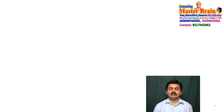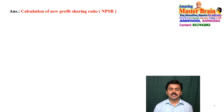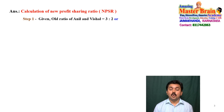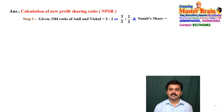Let us solve the problem. First method: Calculation of New Profit Sharing Ratio (NPSR). First, what is given in the problem? The old ratio of Anil and Vishal is 3:2, which we write as 3/5 and 2/5. Sumit's share is 1/5. Using this information we need to find the new profit sharing ratio of all partners.